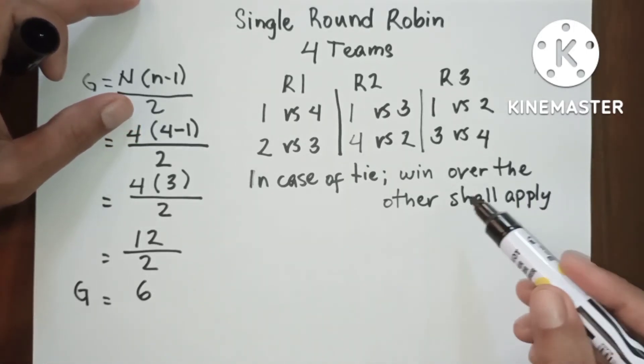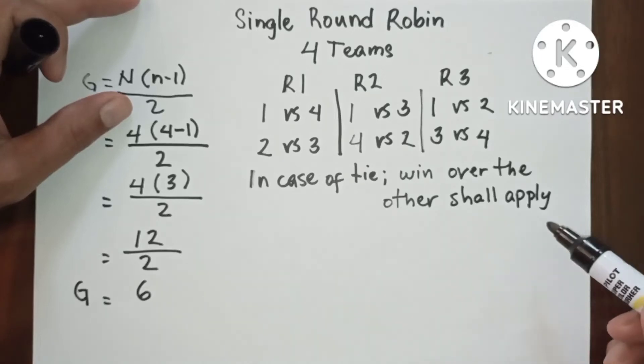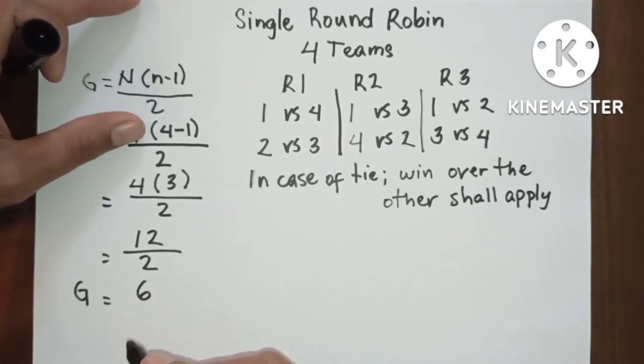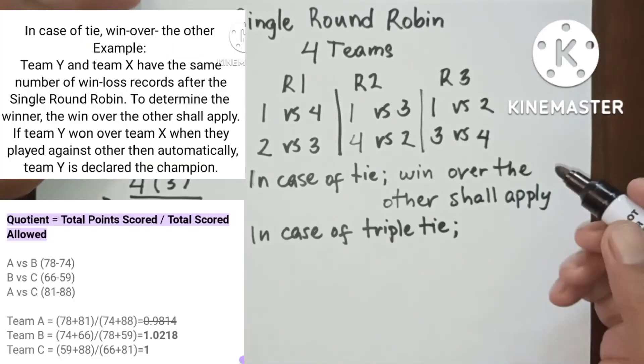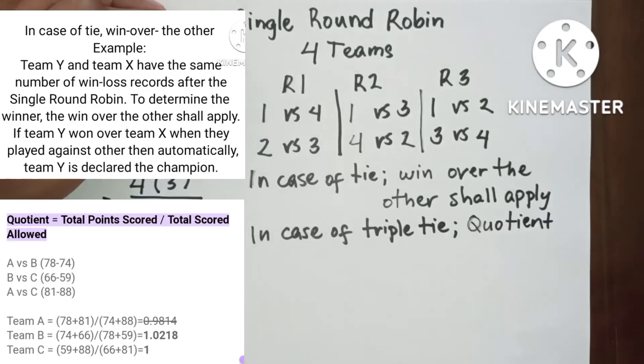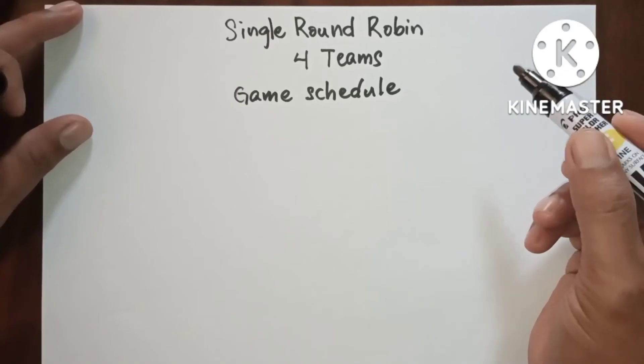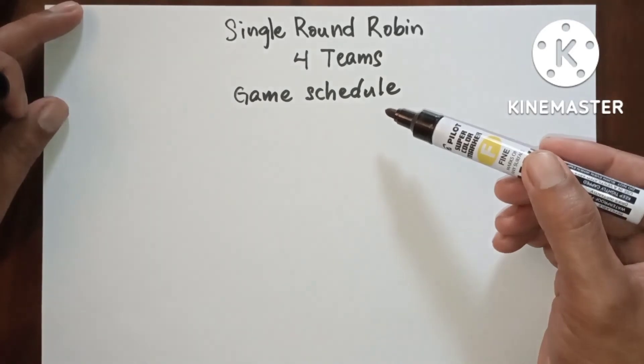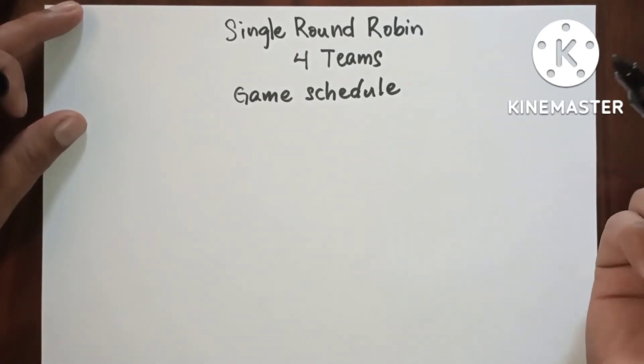In case of tie, win over the other shall apply. But in case of triple tie or more, cushion. Now let's proceed to game schedule since we have six games.